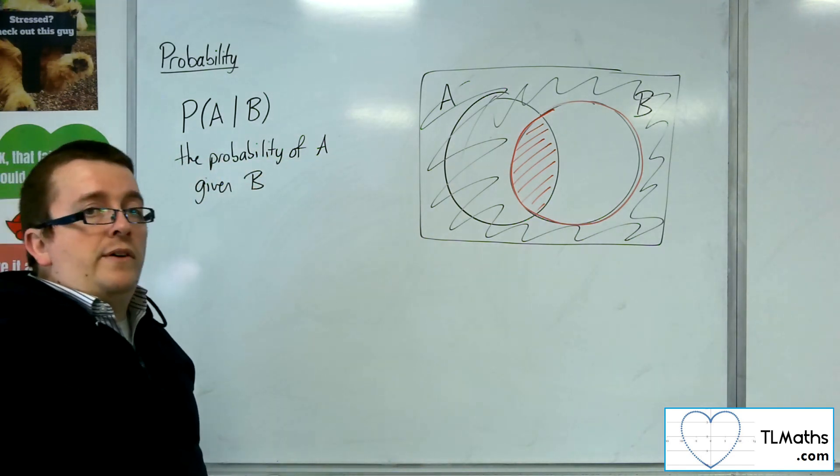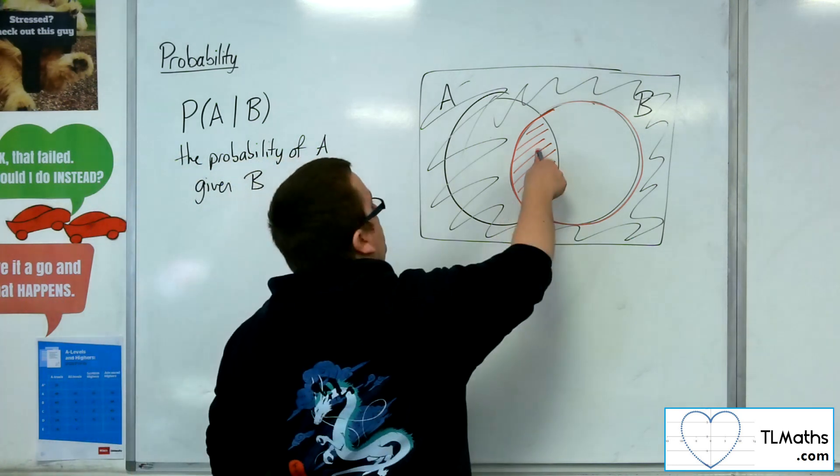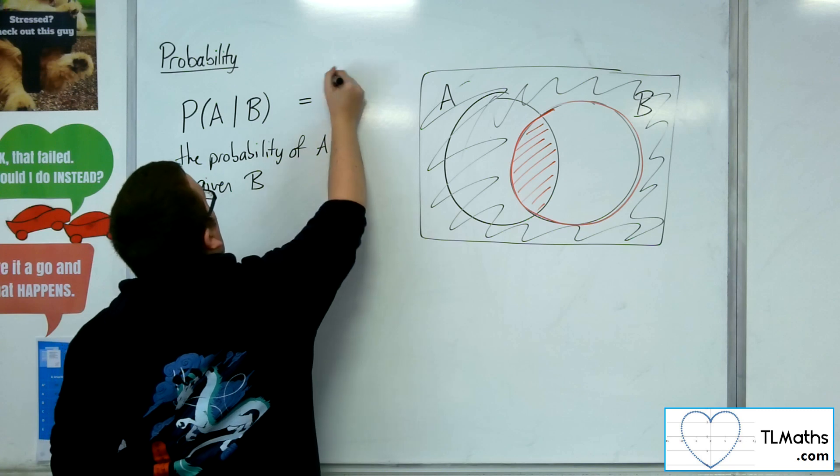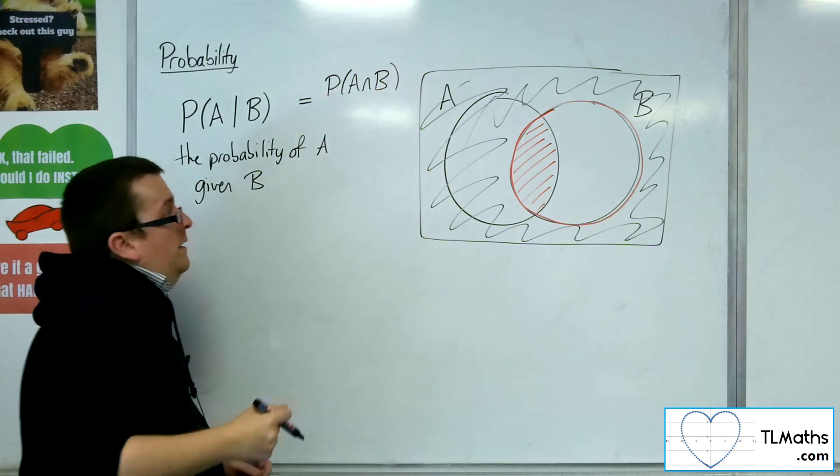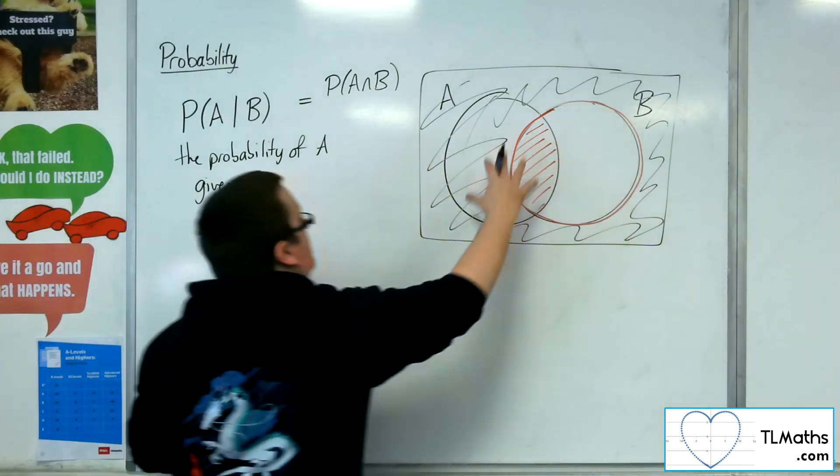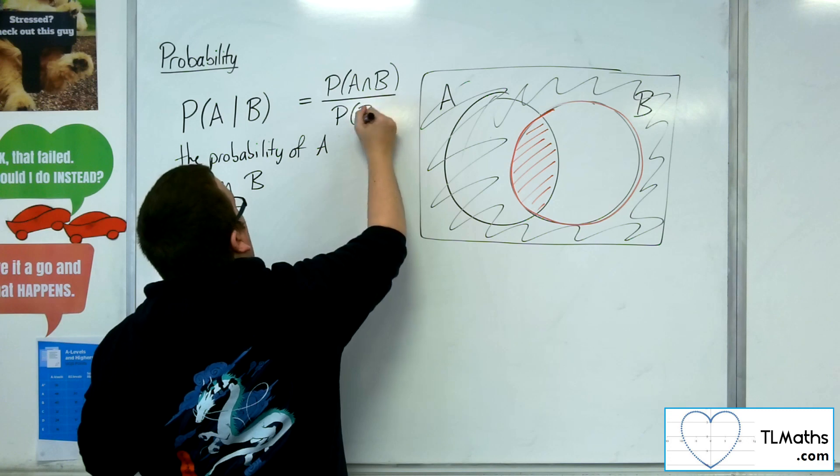That's the probability of A given B. Now, this shaded area, that intersection, we know is given by probability of A intersection B. And if it is out of everything else that is in B, everything that is in B, then that is the probability of B.